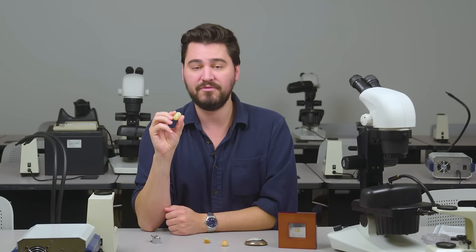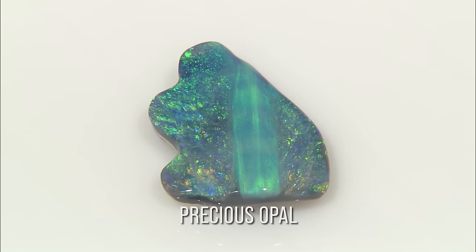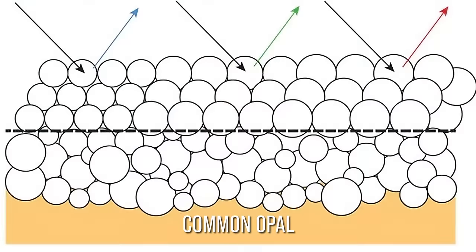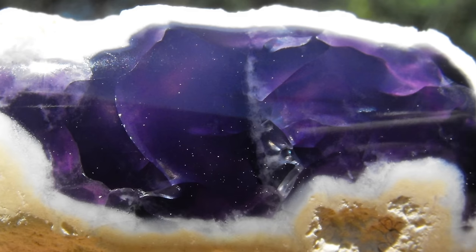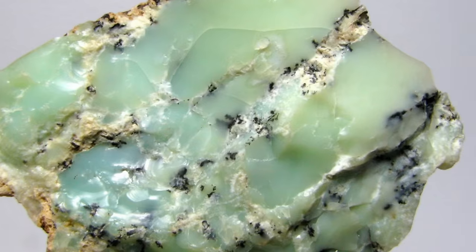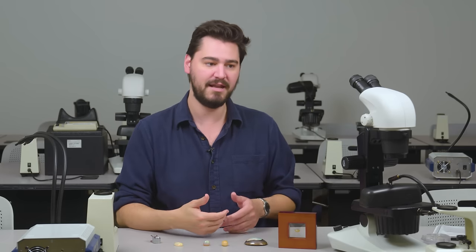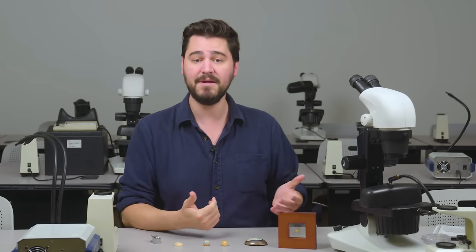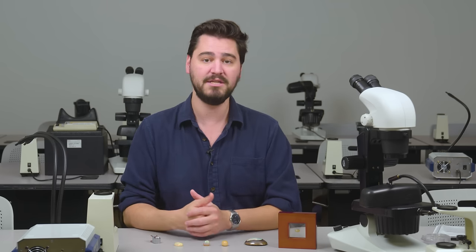Opal that has this optical phenomenon is called precious opal. When these spheres aren't so neatly arranged, you get common opal with no play of color. These can still be quite attractive and come in a variety of colors like purple, blue, green, or white. For today's video, we're going to be talking mostly about precious opal since those are the most valuable and consequently the most imitated material. Let us know in the comments if you'd like a video all about the varieties of common opal — there are a ton and they're really cool.